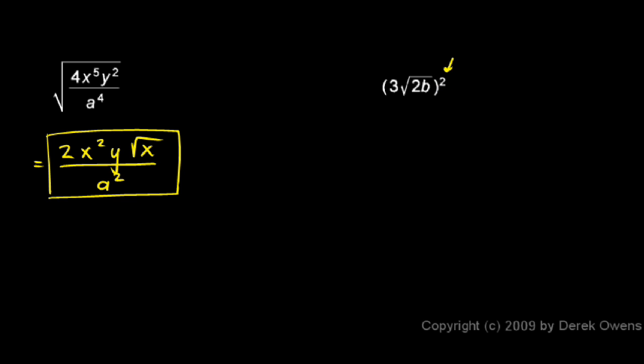So in other words, this squared is going to cause the 3 to get squared and the square root of 2b to get squared. So the 3 squared is 9. And then I multiply. The square root of 2b squared is just 2b. So I have 9 times 2b, which is 18b.